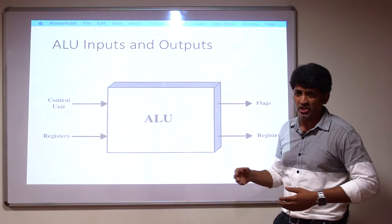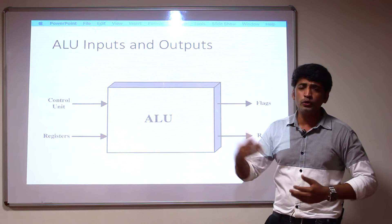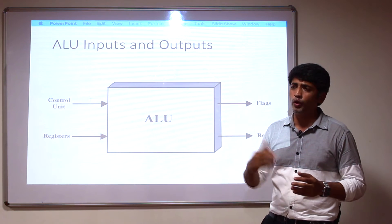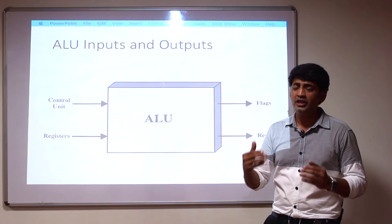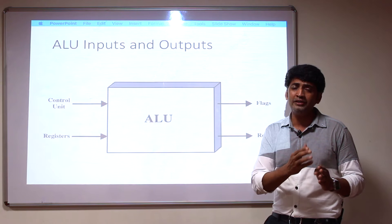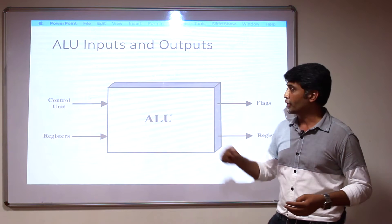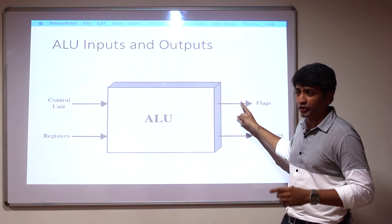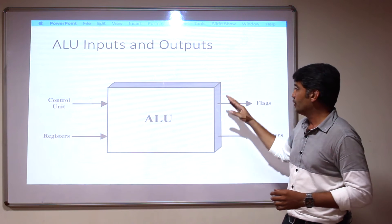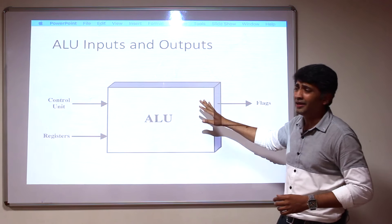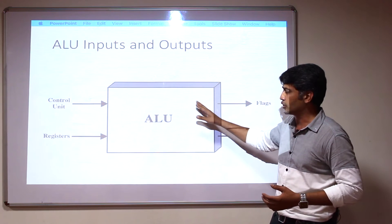The output can also be set to a flag register. For example, if you are adding two numbers and the result goes beyond the 4-bit representation — if a 5th bit appears — that may be an overflow bit. You can use the overflow flag register, setting it to 0 for no overflow and 1 for overflow. These are the major operations related to the ALU.